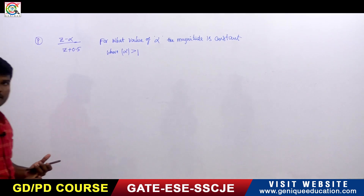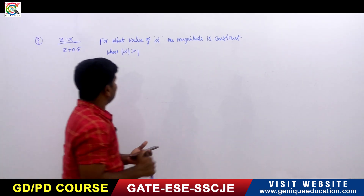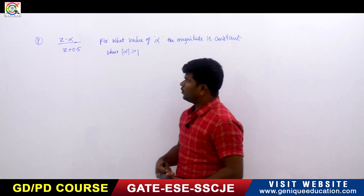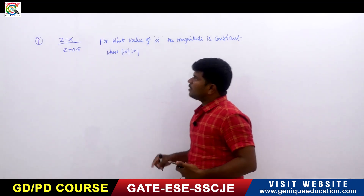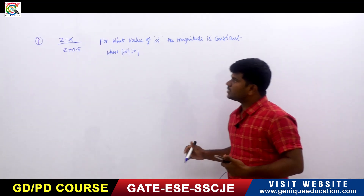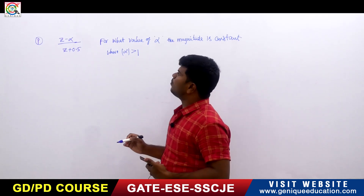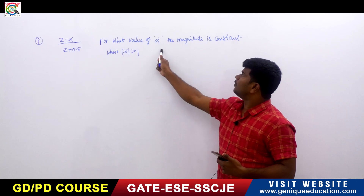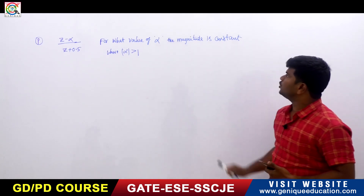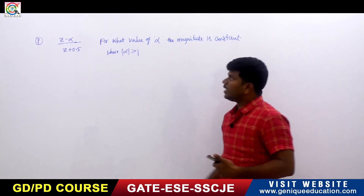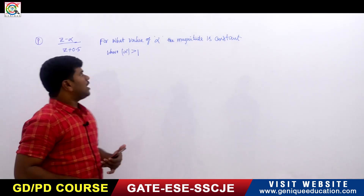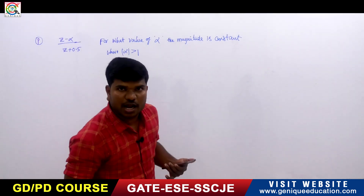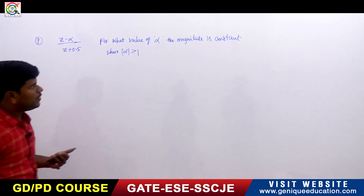This is the next question from signals and systems, from the topic of filters. The transfer function is given as H(z) = (z - α) / (z + 0.5). We need to find the value of α for which the magnitude of this transfer function is constant.